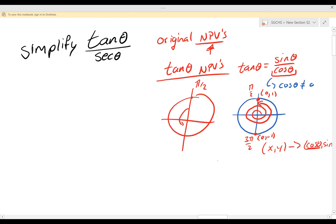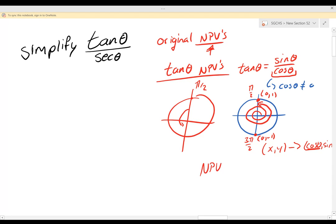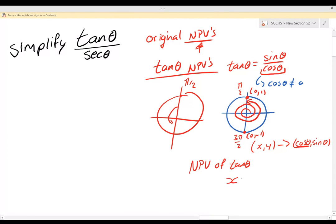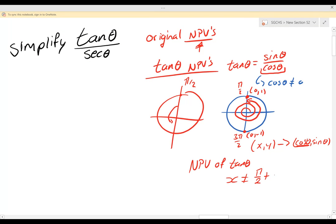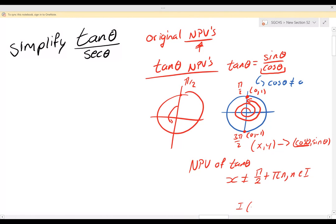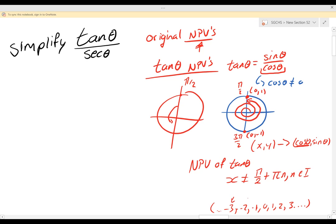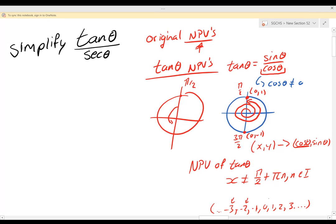So for our non-permissible value of tan θ, what we can say is x cannot equal π/2 plus every interval of π, where n is an integer. So remember integers, those are like -1, 0, 1, 2, 3, and so on—I'll make a few more: -2, -3, and so on—as long as it's an integer whether it's negative or positive and zero.